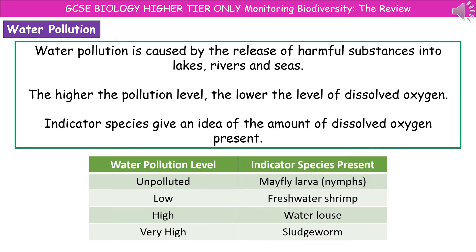If we now turn our attention to water pollution, this is most commonly caused by the release of harmful substances into lakes, rivers and seas. The higher the pollution level, the lower the level of dissolved oxygen. We've got indicator species that give an idea about the amount of dissolved oxygen present. If we find mayfly larvae, we've got very unpolluted water. If it's freshwater shrimp, there's only low water pollution. If we find water lice, then there's quite high pollution. And if there are sludge worms, then there's very high pollution.